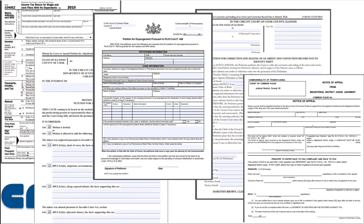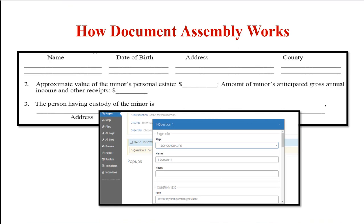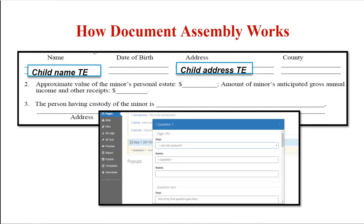Automating a form allows you, the author, to transform a complicated legal document into digestible bits for the end user. You do this by finding all the blanks on the form — all of the spaces an end user would need to answer — and replace those with variables. This automates the back-end template part. Then you take those variables and use them in an interview, the front-end interface for end users, to gather information from the end user. You as the author dictate the flow and order of the questions asked and the variables gathered, regardless of the original order on the form.